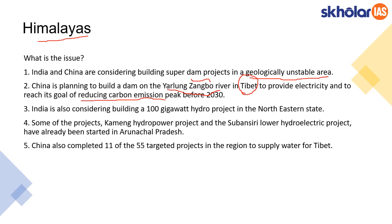India is also planning to build hydro projects in the northeastern states, mostly in Arunachal Pradesh. Projects like the Kamang hydro power project and Subarnashree lower hydroelectric project are already underway. China has completed 11 of its 55 targeted projects, so construction of hydropower dams is ongoing in both countries.